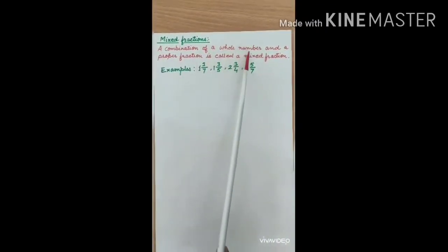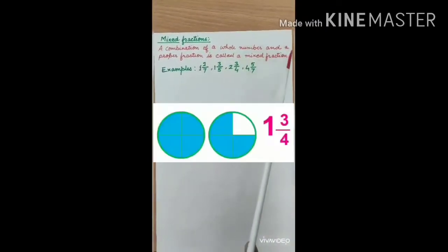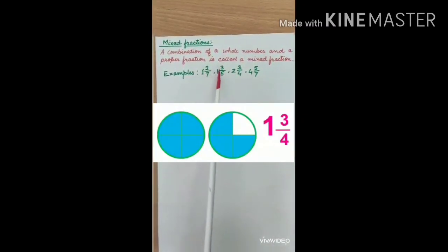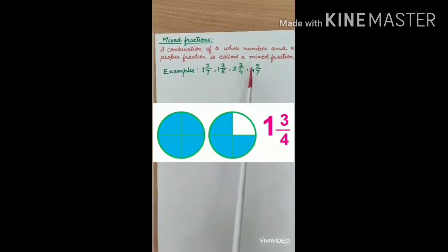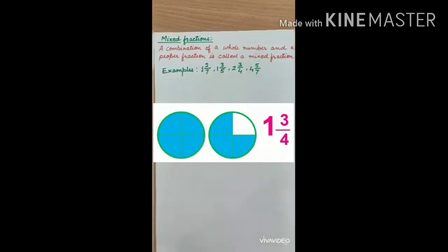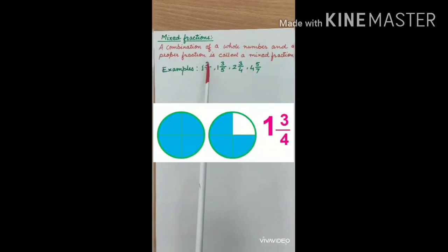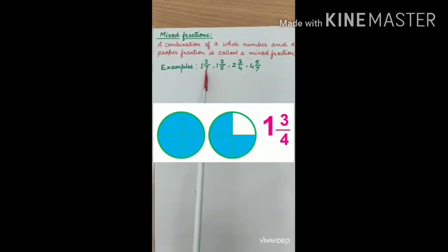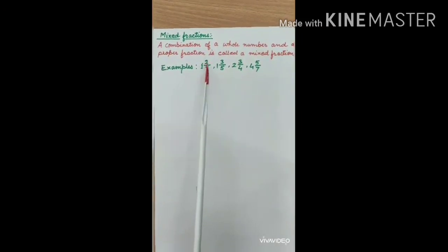Mixed fractions: a combination of a whole number and a proper fraction is called a mixed fraction. For example, 1 and 2 upon 7, 1 and 3 upon 5, 2 and 3 upon 4, and 4 and 5 upon 7. In 1 and 2 upon 7, the 1 is the whole number and 2 upon 7 is a proper fraction, since 2 is smaller than 7, meaning the numerator is less than the denominator.